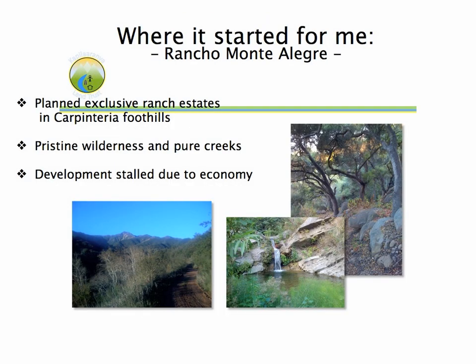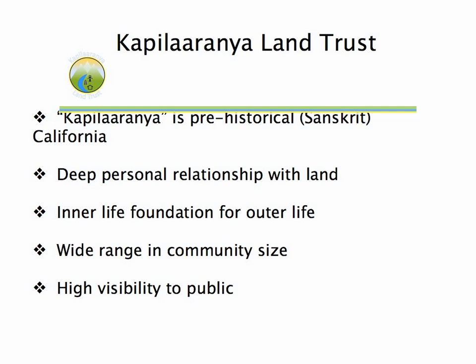Part of this, for me, started with a particular piece of land that I just fell so deeply in love with, hiking it up in the Carpenteria foothills — planned for development of exclusive ranch estates. I just knew that a community land trust-like model for this and other pristine, potentially developable lands was really the key to making it work long-term. The name of our land trust is Kapiladaranya Land Trust, which is a Sanskrit word that some believe is the original word for California.